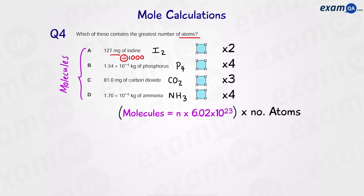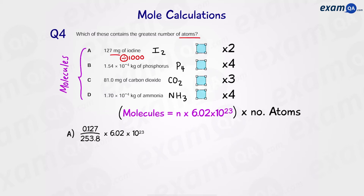Starting with iodine: divide the mass by 1000 to get grams, then divide mass by the Mr of I2, which is 253.8. This fraction gives us moles. Then times by Avogadro's constant — together, all of this gives us the number of molecules of iodine. Then times this by 2 to work out the number of atoms.